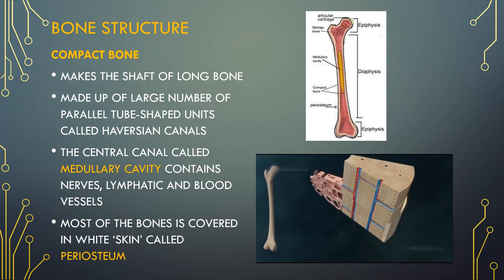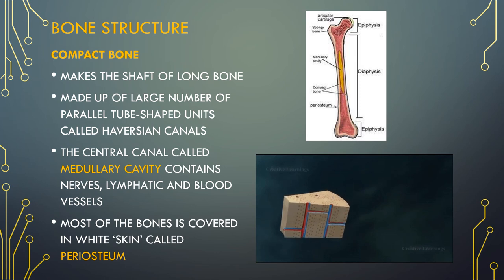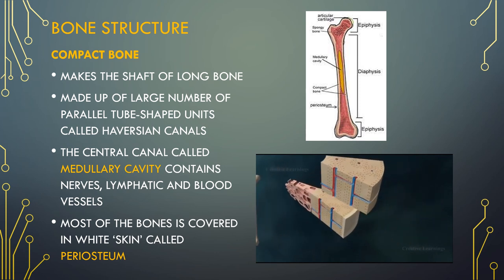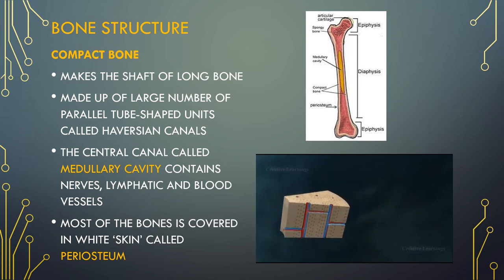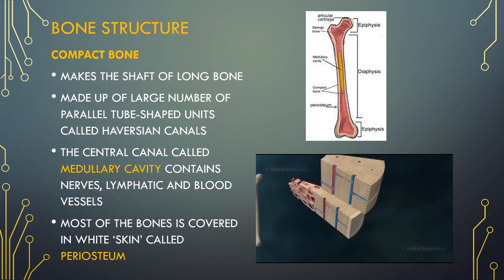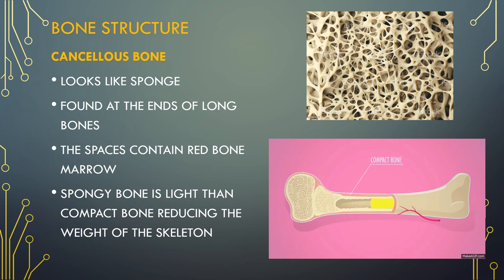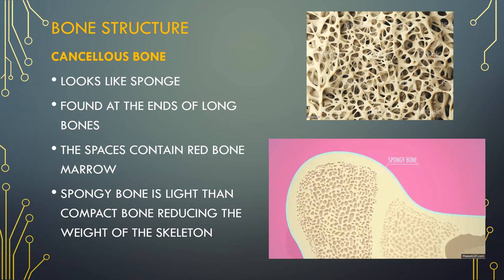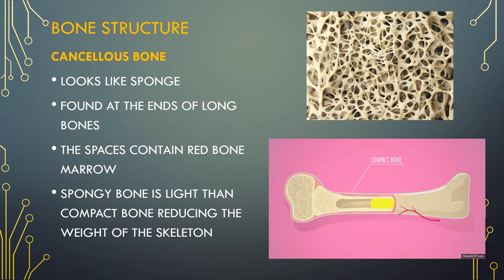The medullary cavity is the hollow part of the bone that contains bone marrow. The bone marrow makes blood cells and stores fat. The periosteum is a thin layer of connective tissue that covers the outer surface of a bone in all places except at joints. Cancellous bone is the meshwork of spongy tissue. It looks like a sponge, found at the ends of long bones. The spaces contain red bone marrow. Spongy bone is lighter than compact bone, reducing the weight of the skeleton.